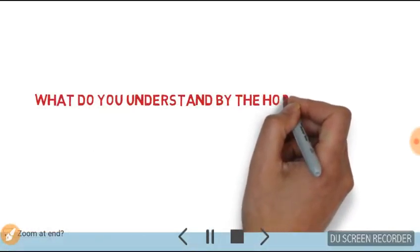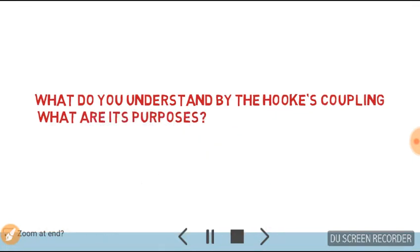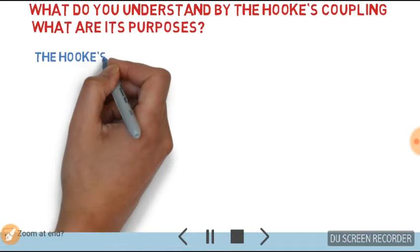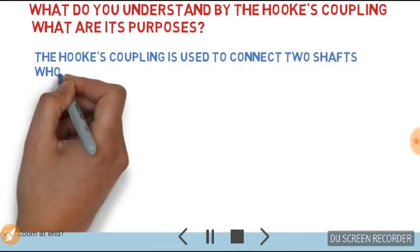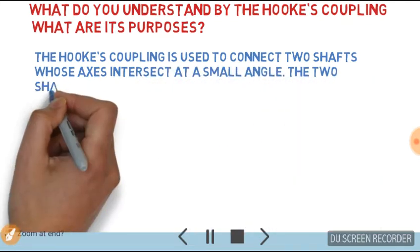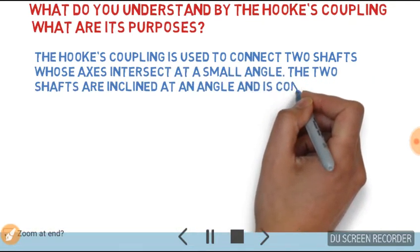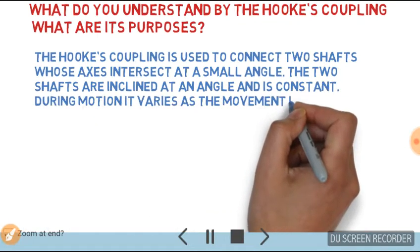What do you understand by the Hooke's coupling? What are its purposes? Answer: The Hooke's coupling is used to connect two shafts whose axes intersect at a small angle. The two shafts are inclined at an angle and is constant.